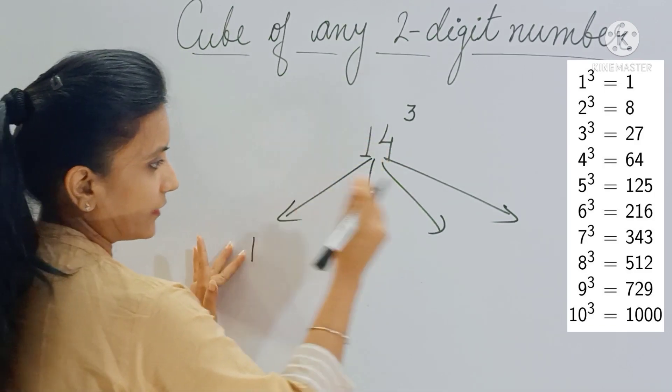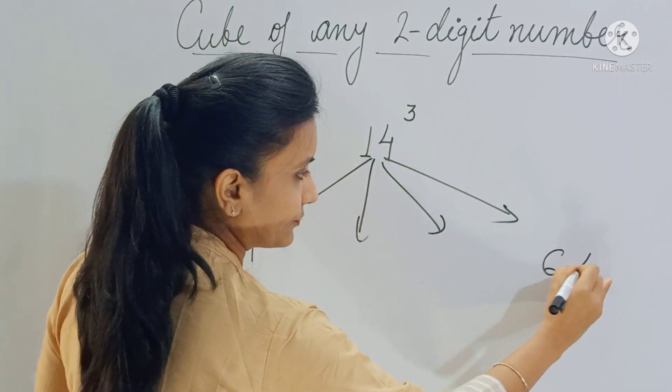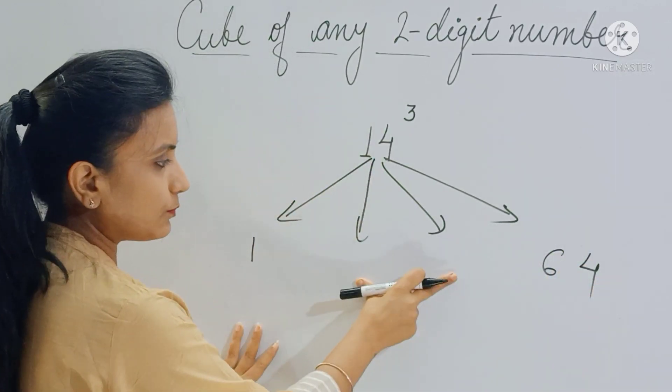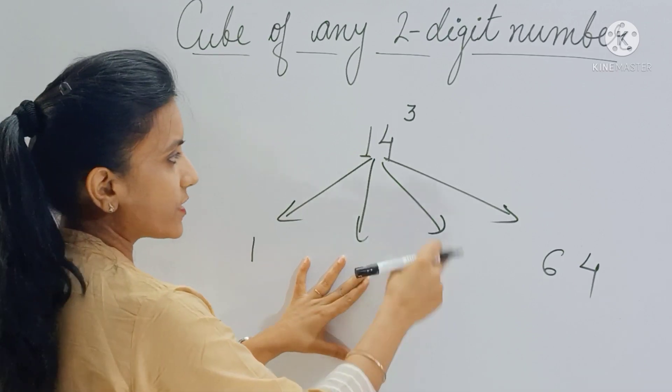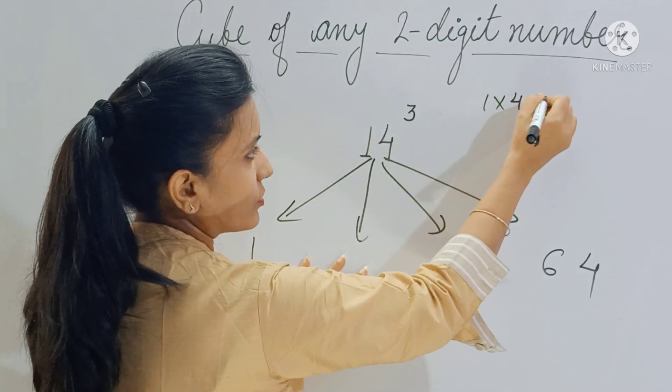And the last part will be the cube of 4, which is 64. Now to find the middle two parts, what you have to do is multiply these three digits: 1 × 4 × 3 gives you 12.